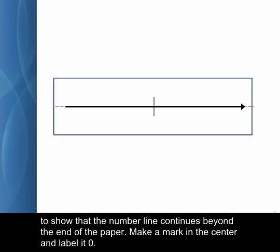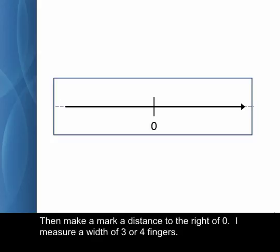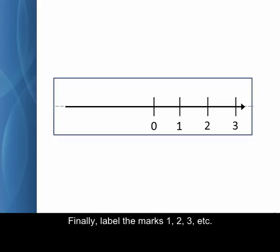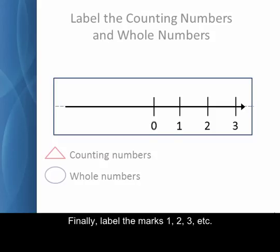Make a mark in the center and label it zero. Then make a mark a distance to the right of zero. I measure a width of three or four fingers. Continue making marks using the same unit width as far as you can to the right. Finally, label the marks one, two, three, etc.